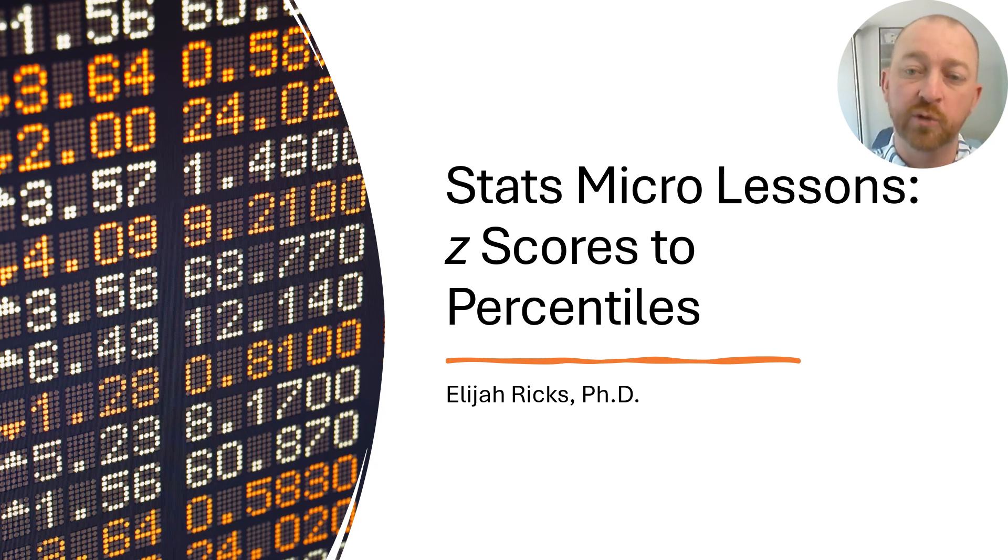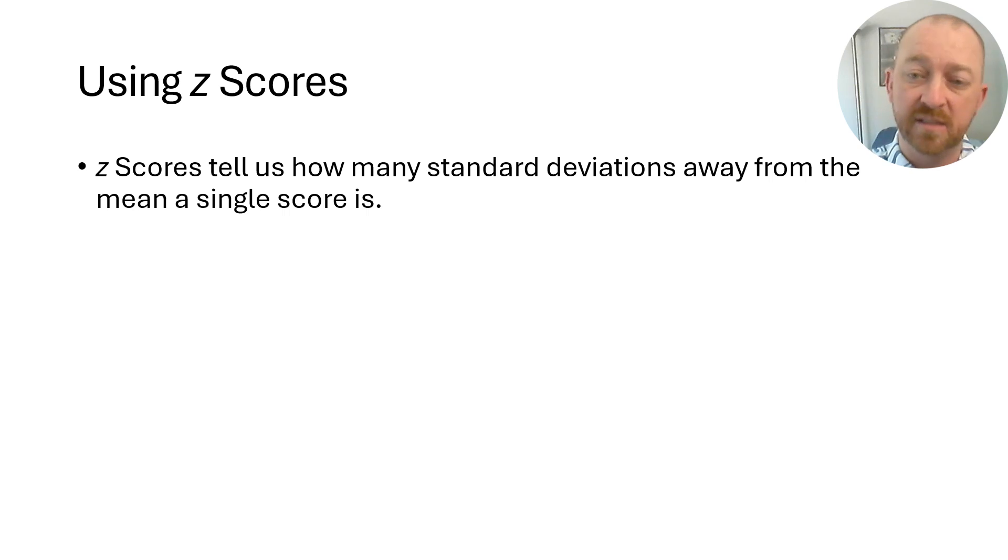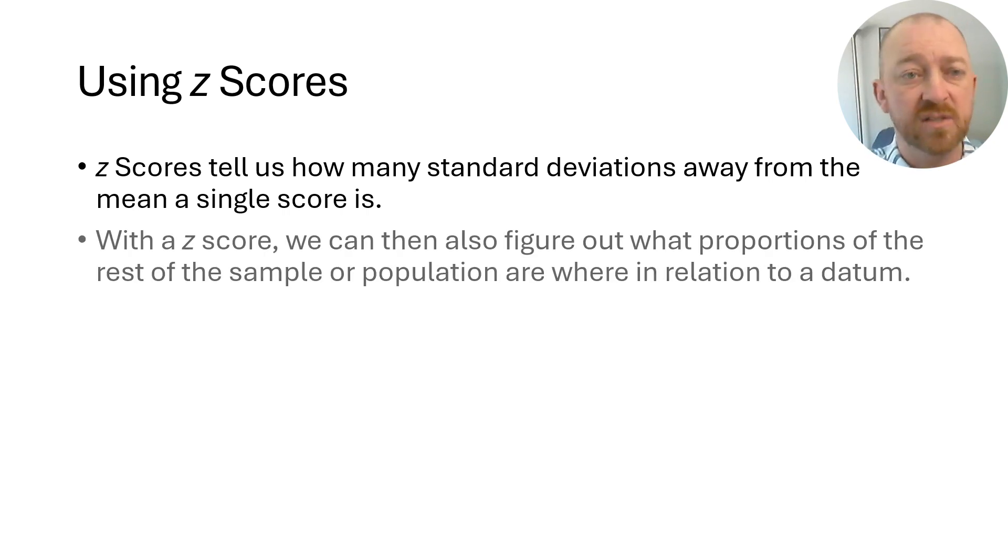Let's now practice converting a z-score into a percentile. Once again, a z-score is a converted score where we take a single score, let's say an exam score, an IQ score, or anything like that. We compare it to its mean and see how far away it is from its mean in terms of standard deviations. How many standard deviations away is this score from the mean of the distribution? That's all a z-score is.